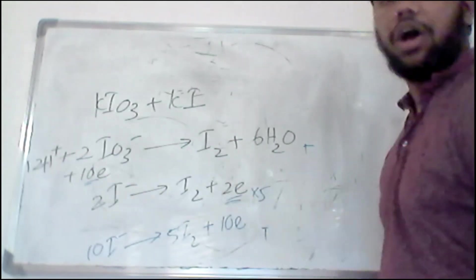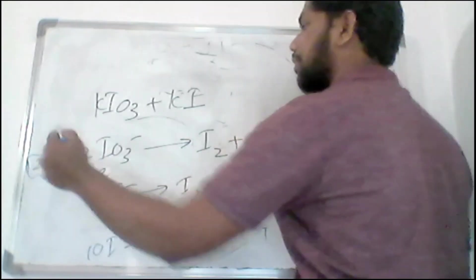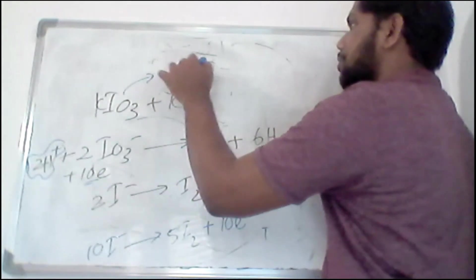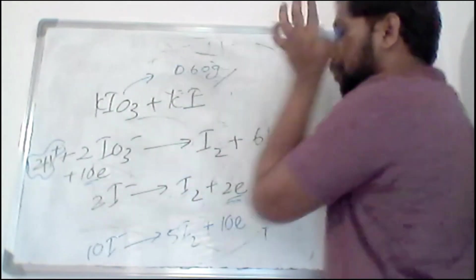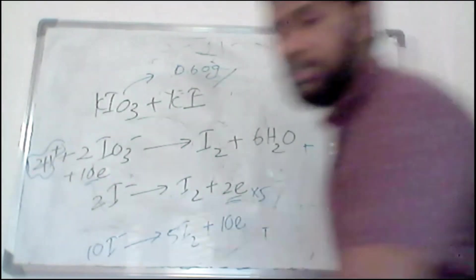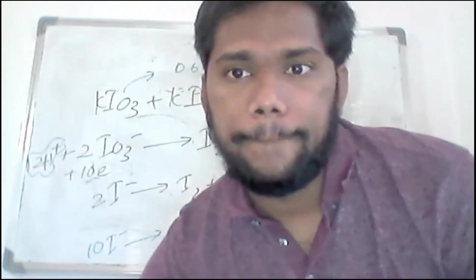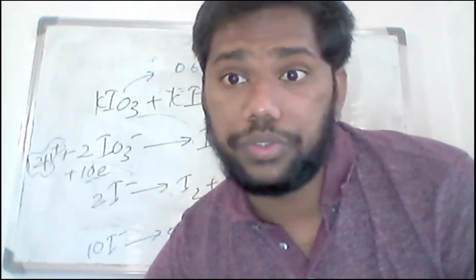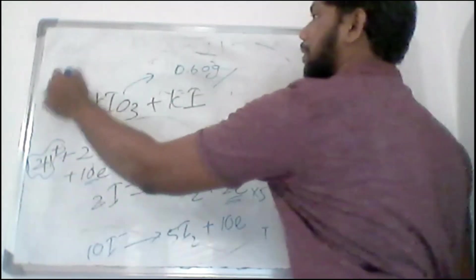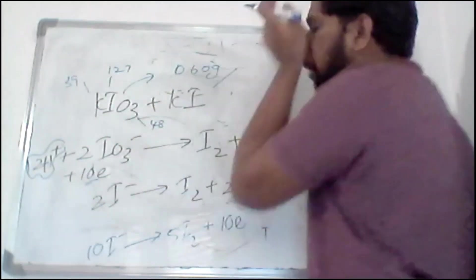The question asks how much moles of H+ that is needed. So you have given the amount of KIO3 that they have used, that is 0.6 grams. So you can find the molecular weight of KIO3. In this case, they have given the values also. So potassium is 39, iodine is 127, 39, 127, and this will be 48. So the molecular weight will be 39, 48.